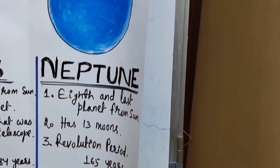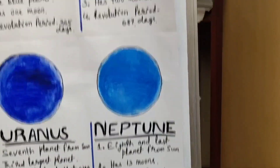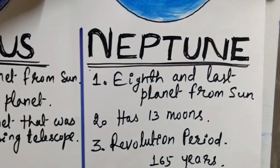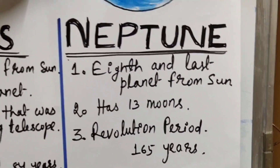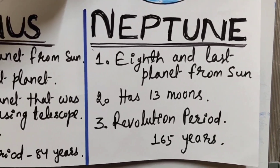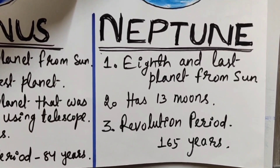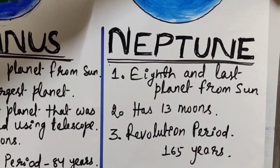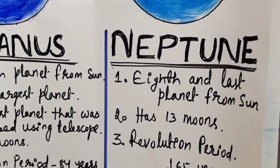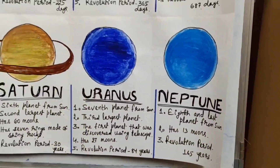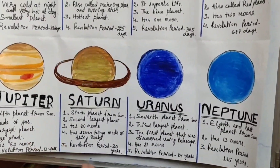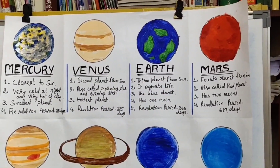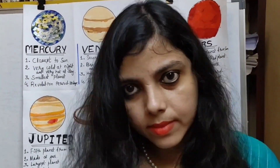After that we have Neptune. It is the eighth and last planet from the sun. It has 13 moons and its revolution period is 165 years. Neptune revolving once around the sun takes 165 years! As I said, the time period of revolution increases according to the distance of the planets from the sun. So this is all about your eight planets in the solar system.